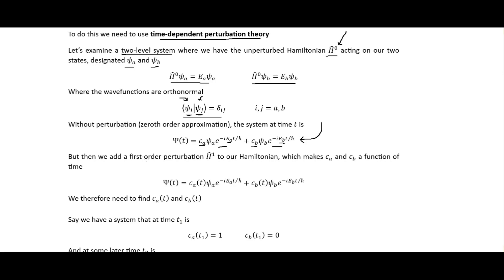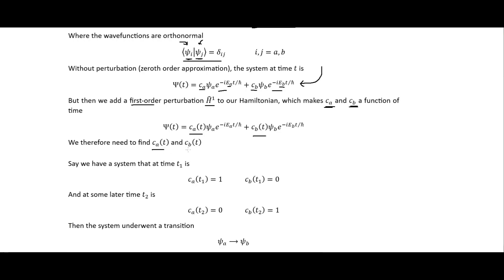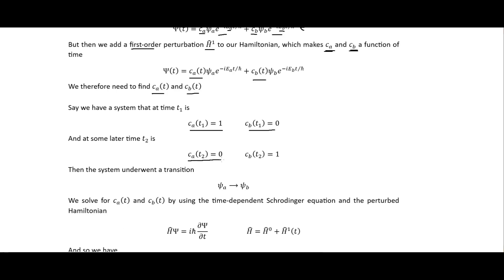We then add the first-order perturbation to our Hamiltonian, which makes both terms a function of time. The probability of finding the particle in some state will change with time, so c sub a and c sub b become functions of time. Say we have the system at time t equals zero where it's definitely in state a and not in state b, but at some later time it's definitely in state b — meaning we underwent a transition from state a to state b.